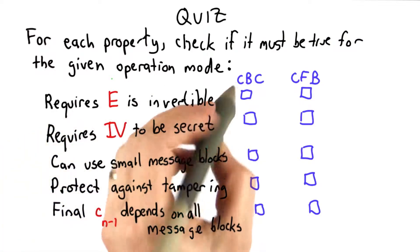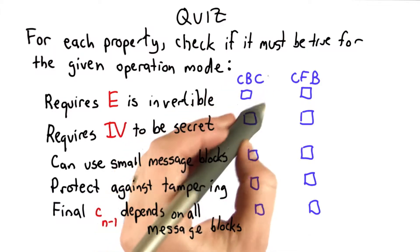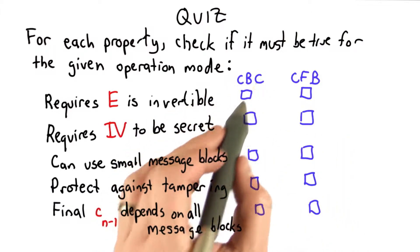So here are the answers. CBC does require the encryption function to be invertible because to do decryption we need to use the inverse of the encryption function.